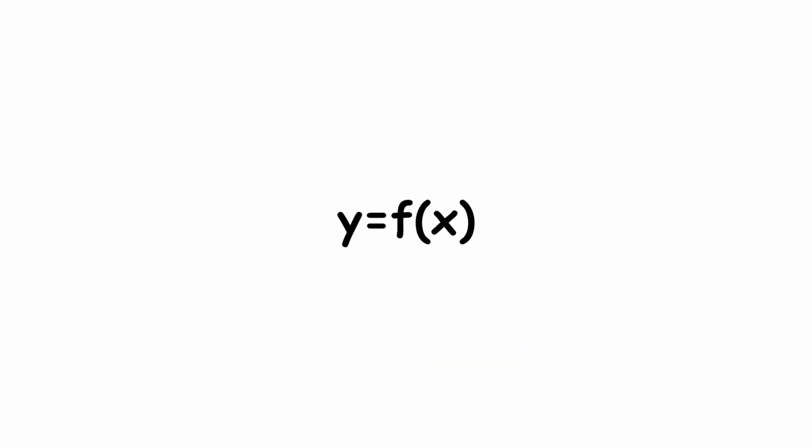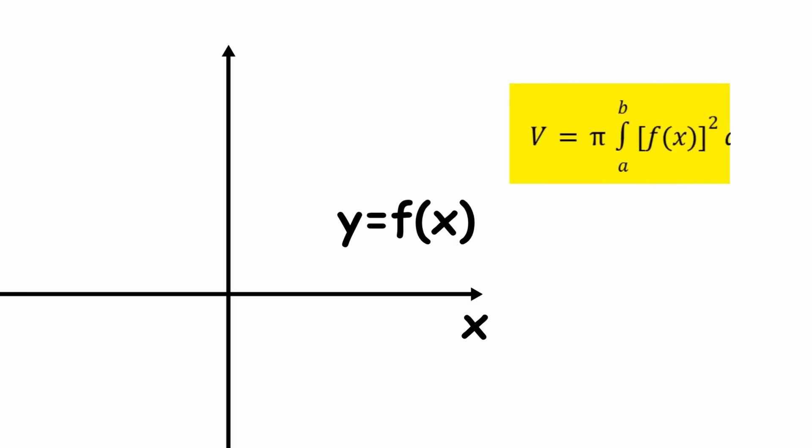Mathematically, if a curve Y equals F times X is rotated around the X axis, the volume of the generated solid is calculated as the volume V is equal to pi times the integral of F of X squared from A to B with respect to X.